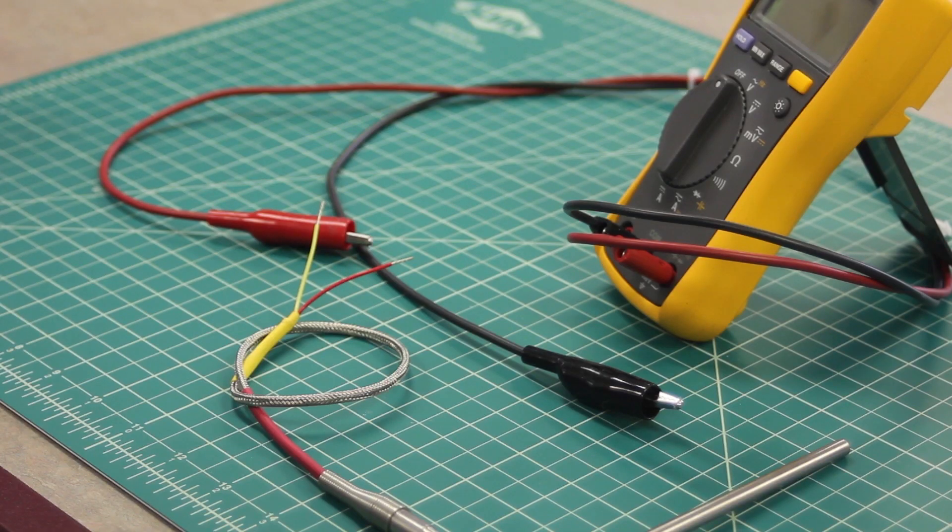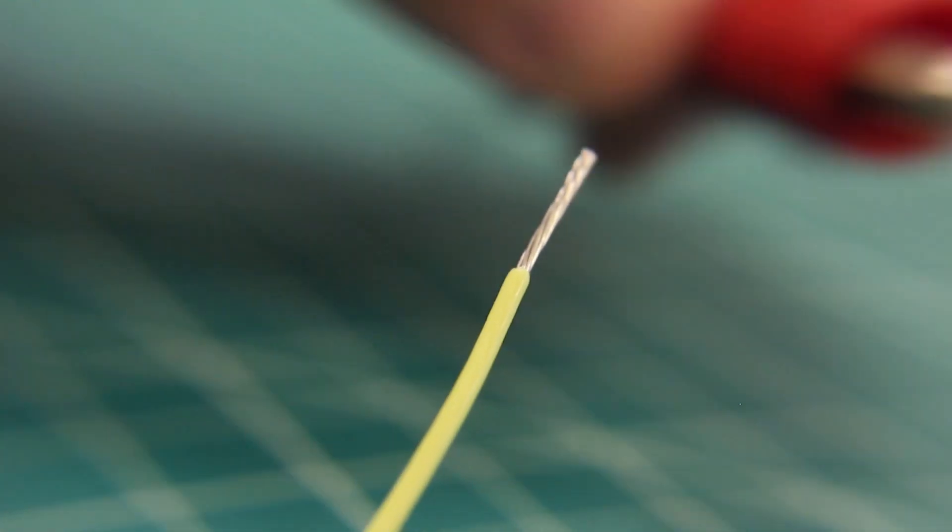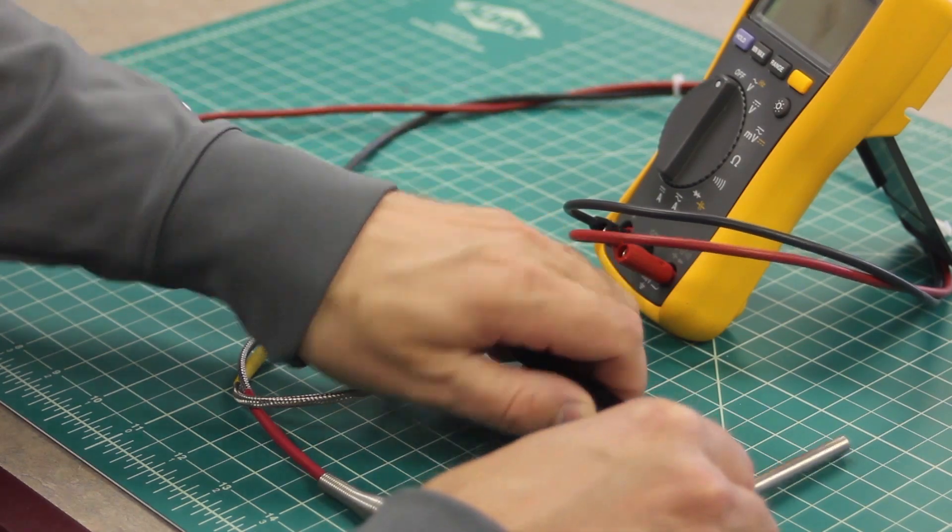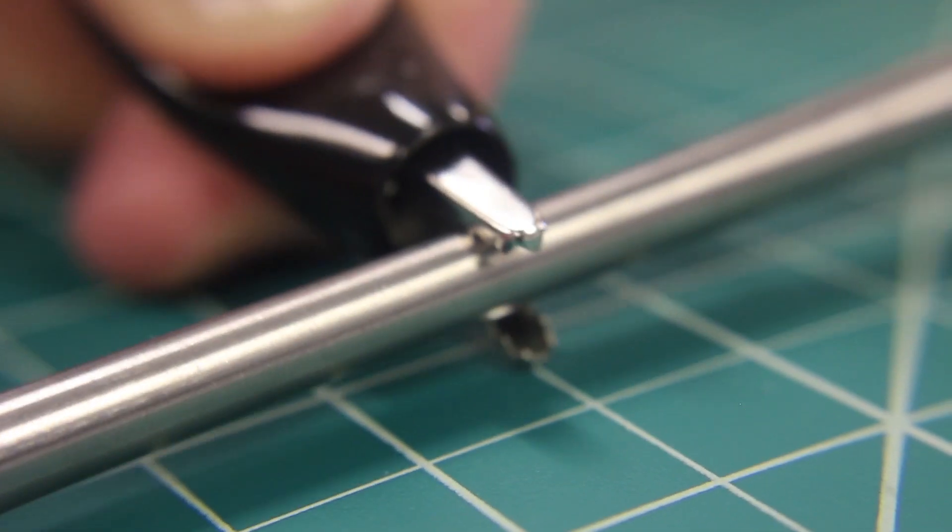Begin by attaching the positive lead of the multimeter to either of the sensor's signal wires. Next, attach the negative lead of the multimeter to the sensor's sheath.